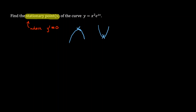So what do we have to do to find the stationary points? We have to differentiate. We want to differentiate y equals x squared e to the 2x. Hopefully you should notice that we've got two functions multiplied — x squared and e to the 2x — so when we've got two functions multiplied, we need to use the product rule. Let's call the first function u, which is x squared, and the second function v, which is e to the 2x.